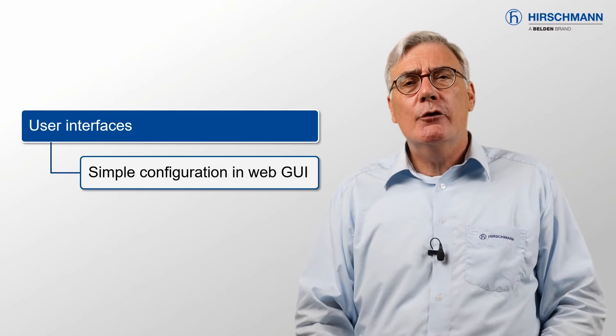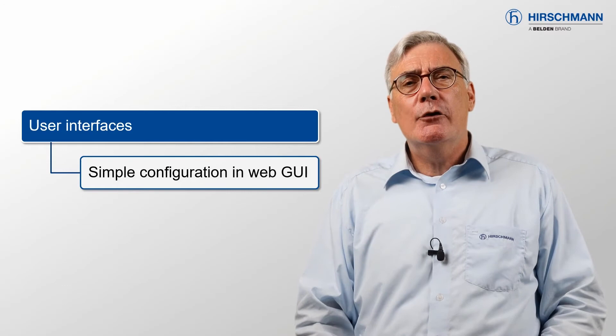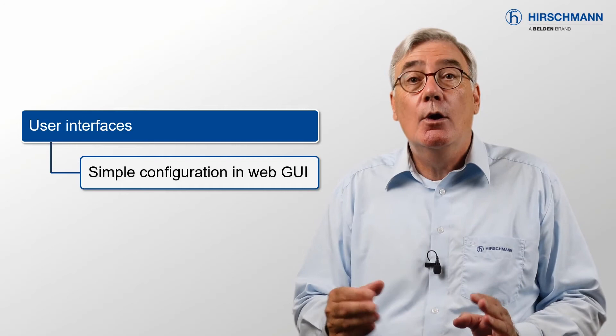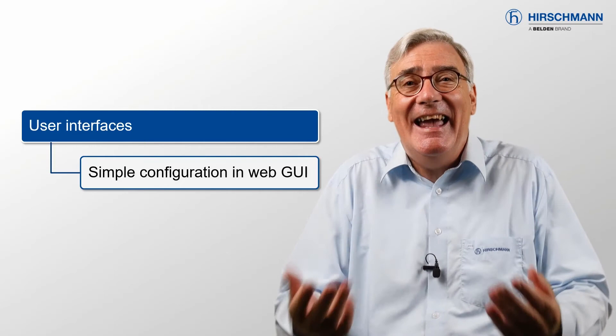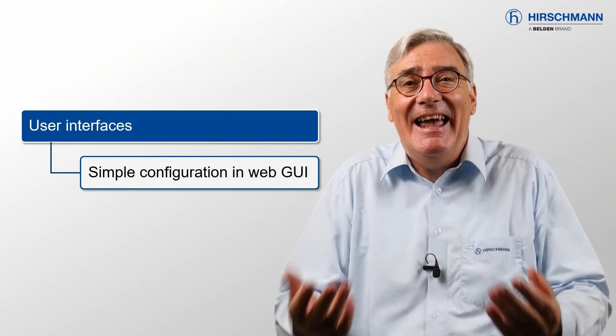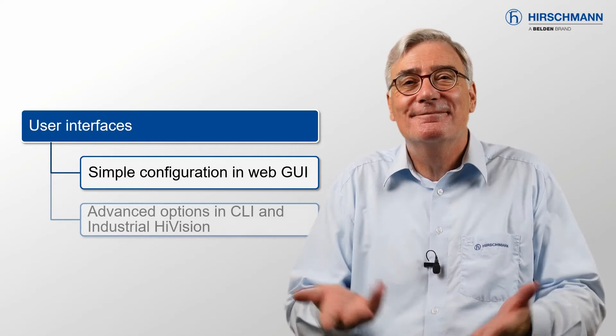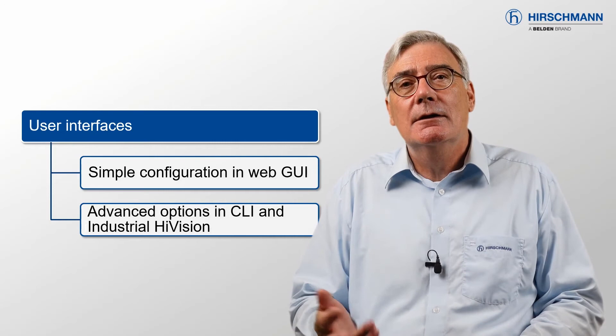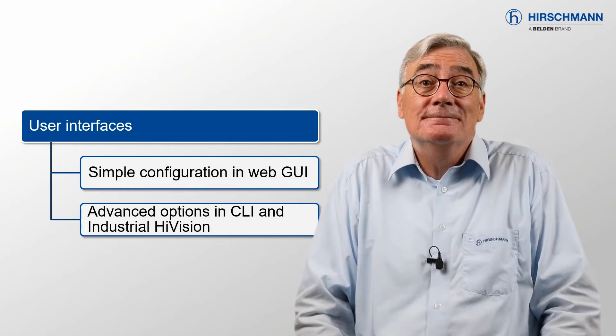We decided to go a step further. In the graphical user interface, you will only find two templates: one for a cycle time with two time slots, and one for a cycle time with three time slots. It cannot get easier than a simple choice between the two options. Of course, once you become more proficient with TSN, you may want to use some of the other templates, which are available in the command line interface and industrial HiVision.